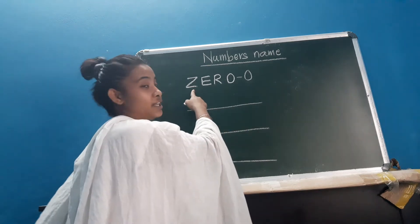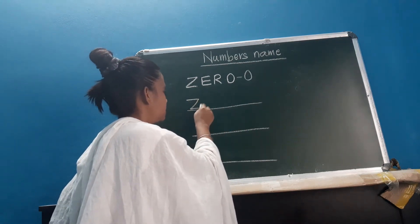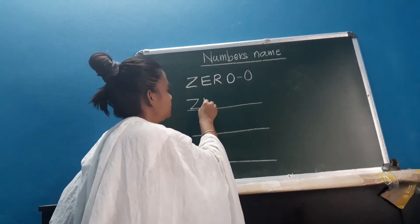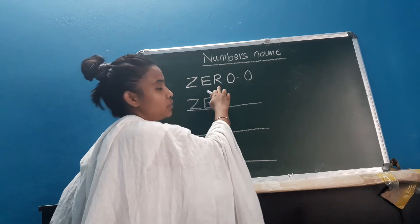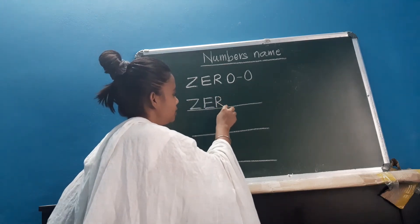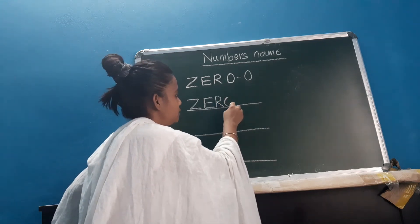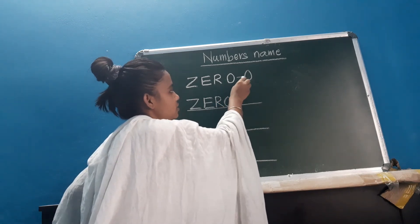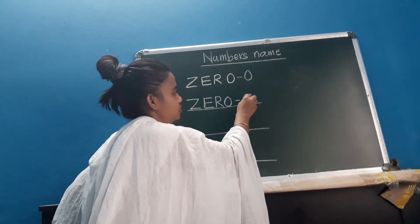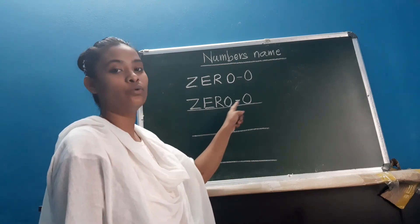Let me show you. First letter is Z, so you have to write here Z. Second one E, so you have to write here E. Third one R, so you have to write here R. And the fourth one — last one O — so you have to write here O, and this as well. Z-E-R-O. Zero.